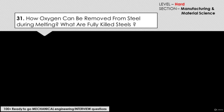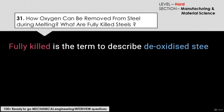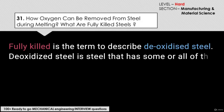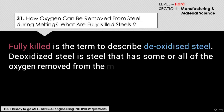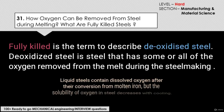How can oxygen be removed from steel during melting, and what are fully killed steels? Fully killed is the term used to describe deoxidized steel — a steel that has some or all of the oxygen removed from the melt during the steel-making process. Liquid steels contain dissolved oxygen after their conversion from molten iron, but the solubility of oxygen in steel decreases with cooling.